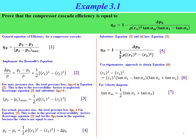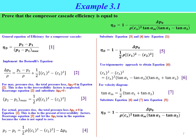From the velocity diagram, tangent alpha_m equals half times (tangent alpha_1 plus tangent alpha_2), referred to as Equation 7. Substituting Equations 6 and 7 into Equation 5, we can prove that mu_d = one minus delta p0 divided by rho cx squared times tangent alpha_m multiplied by the bracket (tangent alpha_1 minus tangent alpha_2), as required.